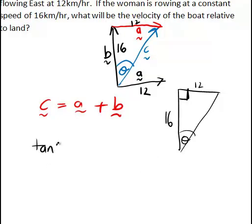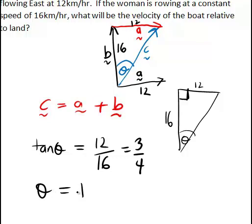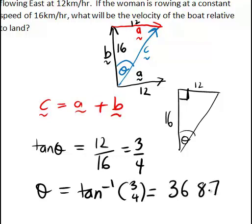That means to find the actual direction of travel theta relative to land, it's just going to be tan theta is equal to 12 divided by 16 for opposite side over adjacent side, or 3 divided by 4. That then means theta is just going to be the inverse tan, or arc tan of 3 on 4, and that works out to be 36.87 degrees.